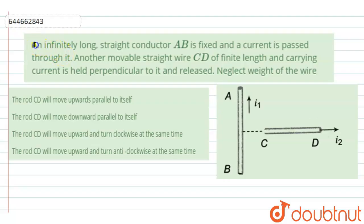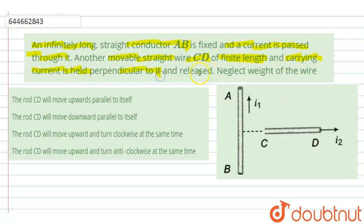The question is: an infinitely long straight conductor AB is fixed and a current is passed through it. Another movable straight wire CD of finite length and carrying current is held perpendicular to it and released. Neglect the weight of the wire. We have to tell the motion of CD from the given options.